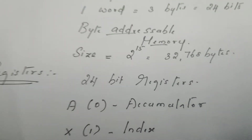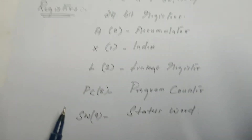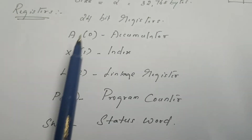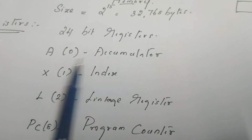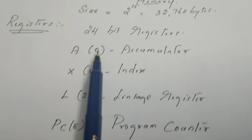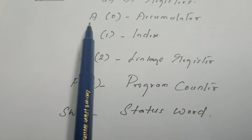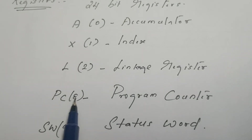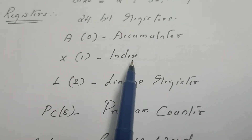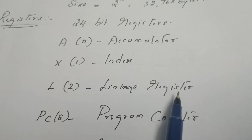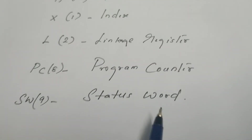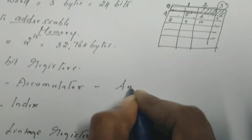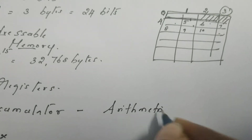SIC architecture supports 5 registers. Every register is of 24-bit size, and each register is assigned an ID. Accumulator has ID 0, index register X has ID 1, linkage register L has ID 2, program counter PC has ID 8, and status word SW has ID 9. Accumulator is used to carry out arithmetic operations.